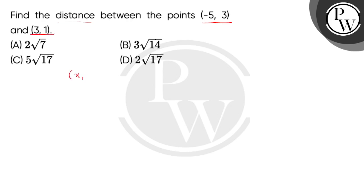So kids, given we have two ordered pair points: (x₁, y₁) we call (-5, 3) and (x₂, y₂) we call (3, 1).